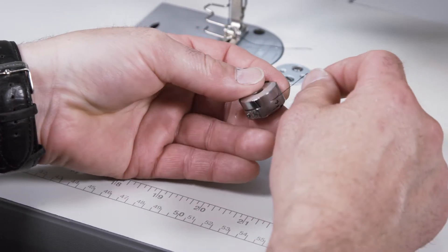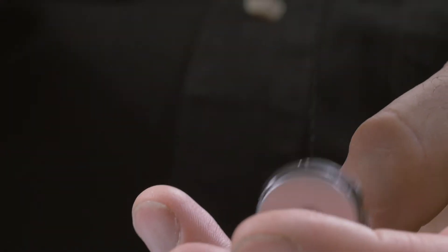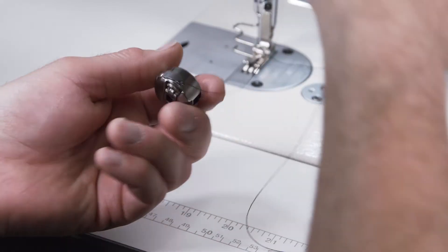Secure the bobbin with your thumb. Make sure the thread is under the tension assembly. When you bounce it up and down, there should be movement in the bobbin case.